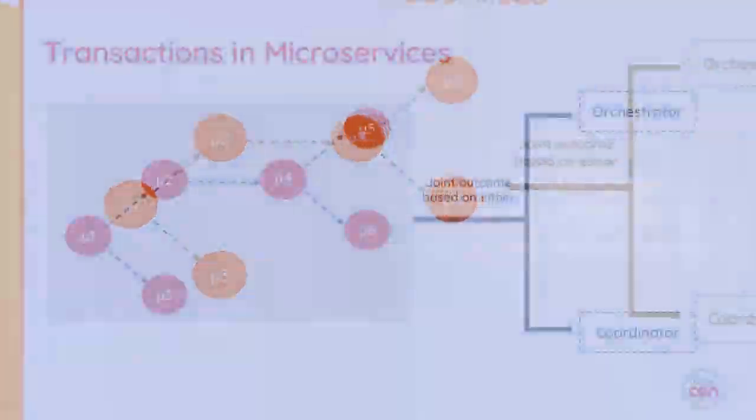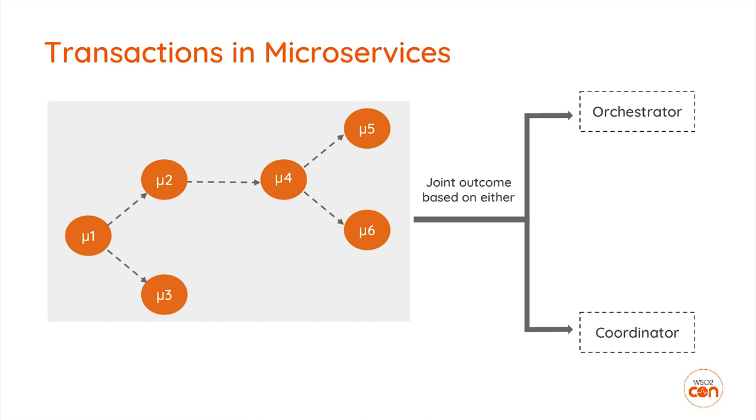If microservices are going to participate in the same transaction, we need to make sure all of them share a common transaction context, which means we need to propagate this transaction context across services — most probably via the network. In practical scenarios this problem can be worse because there can be multiple microservices interacting in a chain: microservice one talks to two and three, two talks to four, four talks to five and six.